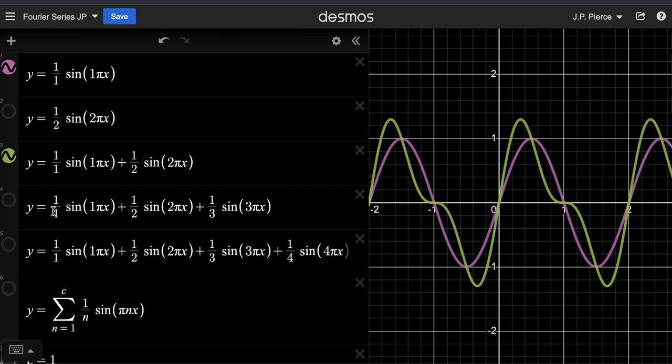You could continue with this. The next function we'll graph is 1 over 1 sine 1 pi x, 1 over 2 sine 2 pi x plus 1 over 3 sine 3 pi x. We're going to add this third term.